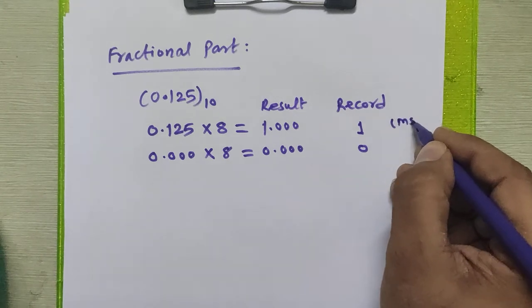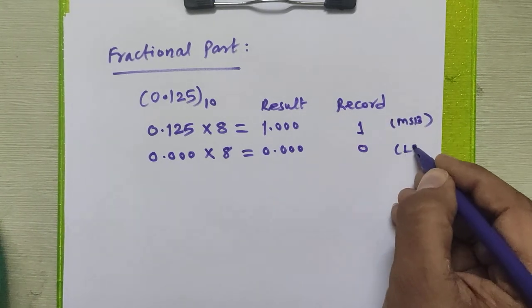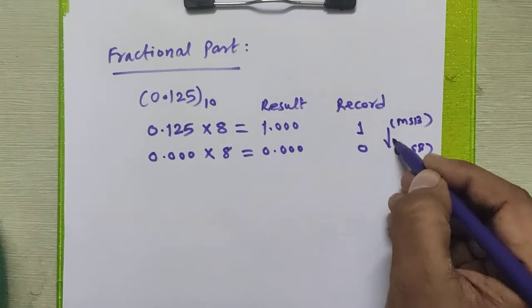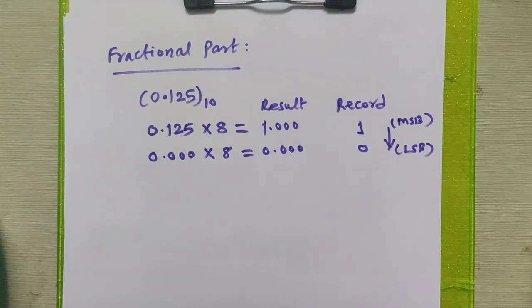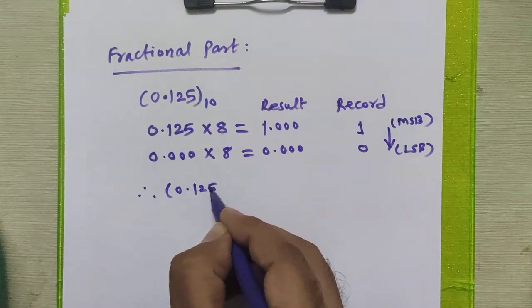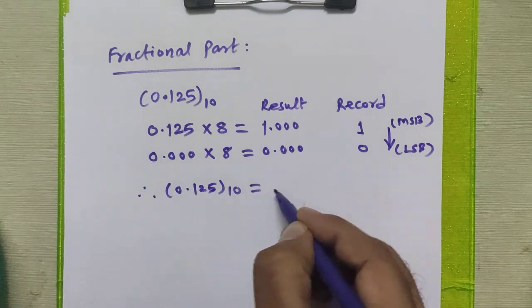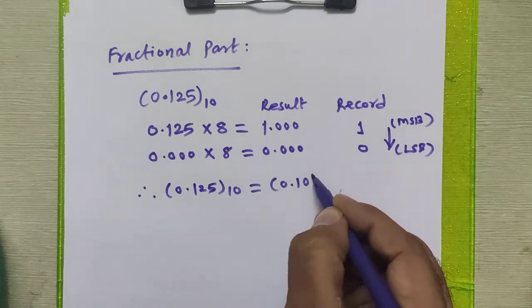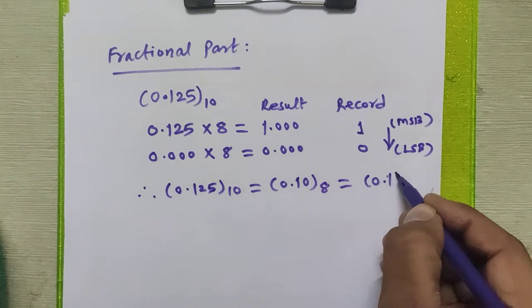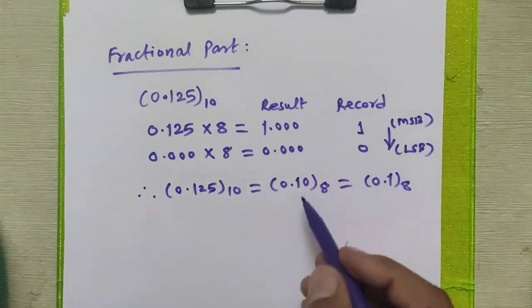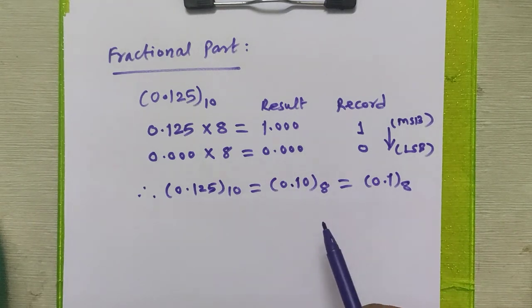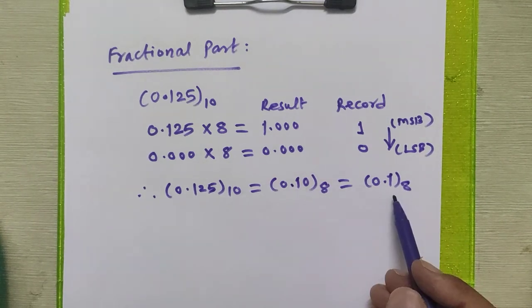So this is MSB bit, this is LSB bit. For fractional part, we will arrange the data from top to bottom. So I can say that 0.125 decimal is equal to 0.10 in octal, or we can say 0.1 in octal. We can discard this trailing 0 because it is coming after a decimal point. These two numbers are the same.